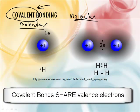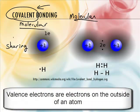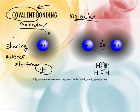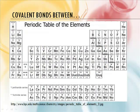So covalent bonding is sharing valence electrons. In our picture here, we have a hydrogen atom with his one electron, and he meets up with another hydrogen atom with his one electron, and they share. Do you teach your kids to share? I do. So a covalent bond is a bond between a non-metal and a non-metal.